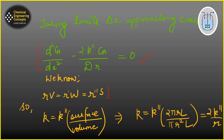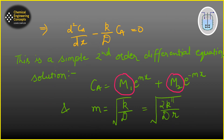Before solving, let's define the reaction rate terms. R_v is based on reactor volume, R'_w is based on catalyst weight, and R''_s is based on catalyst surface area. We establish the relationship between R_v and R''_s, allowing us to replace k-double-dash with a k term in our ODE.